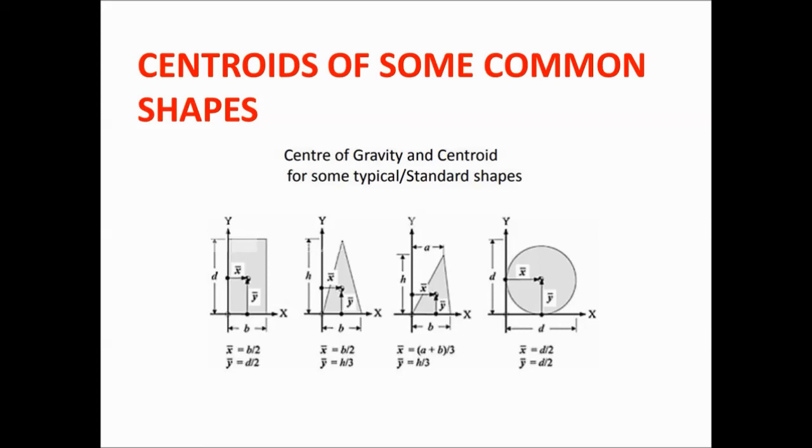The x-bar centroid will be a plus b divided by three, and the y-bar centroid will be h by three, the same way we considered in the second triangle.